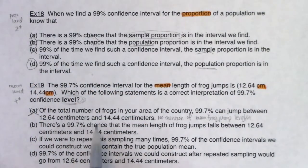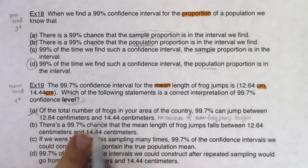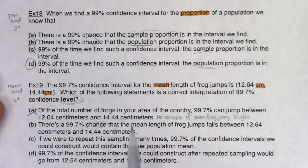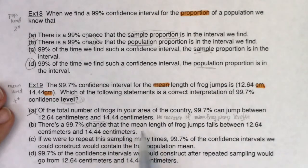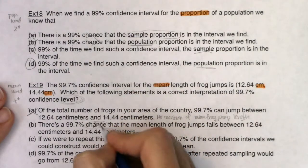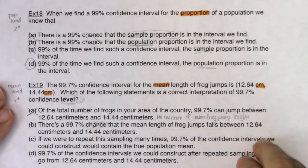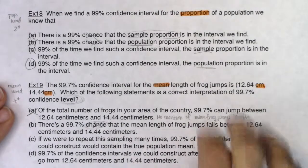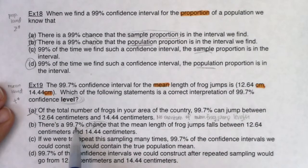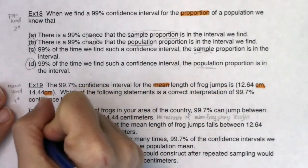Option B says there's a 99.7% chance that the mean length of frog jumps falls between 12.64 centimeters and 14.44 centimeters. I like everything about this — it mentions mean frog jump length — but it's the word 'chance' that's incorrect. Again, it's either 0% or 100%: I either got a good interval or I didn't. This 99.7% does not refer to my individual interval, so this is not the correct sentence.